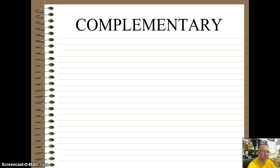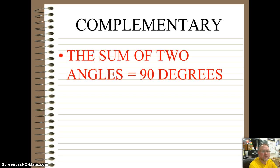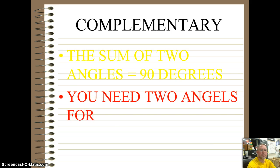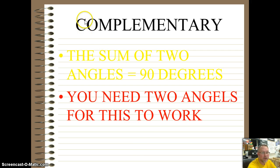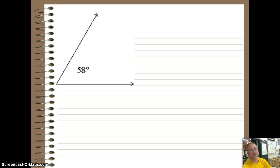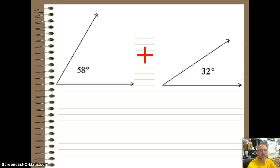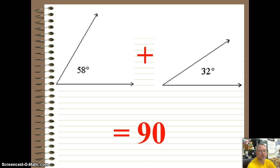Complementary angles — and this hopefully will be a little review — is simply the sum of two angles that equal 90 degrees. So you're putting two angles together; you'll always have to have two in complementary, and they always equal 90 degrees. One way I look at it: take the C in complementary and make it into a 9, and with the O that gives you a 90 degree angle — a play on words to remember it. So if we add our 58 degree angle to our 32 degree angle, we get a total of 90 degrees.